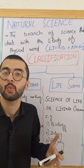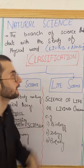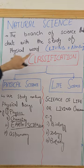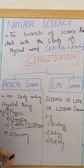What is natural science and what is the classification of natural science? So, natural science is the branch of science that deals with the study of physical world. It includes both living and non-living things.